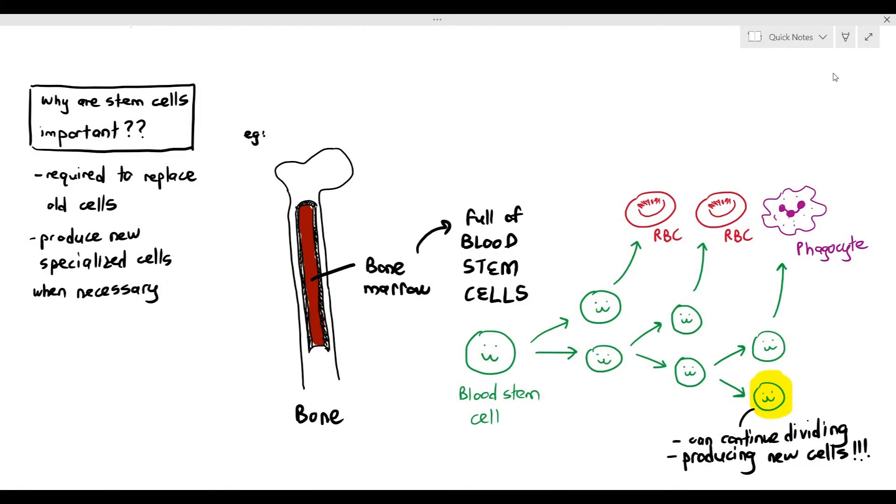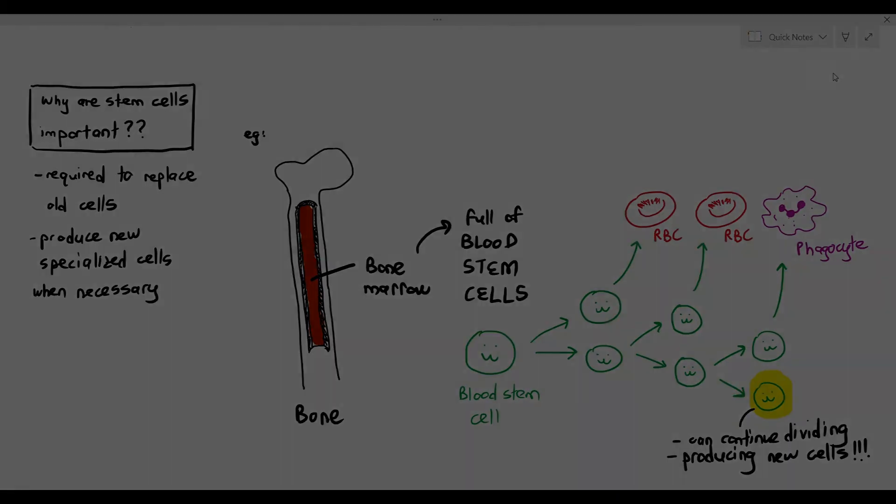So, stem cells are just these interesting cells in your body that, number one, they divide, but in a controlled manner, by the way, their cell division is carefully controlled, and they produce specialized or differentiated cells when it is necessary. That is their major function in our body.